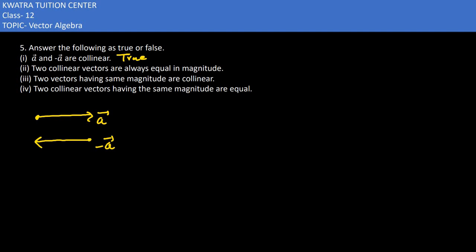They are always equal in magnitude. But sometimes they are not, because if they are collinear to be A and B, so they are parallel to each other, A and B, but the magnitude can differ.